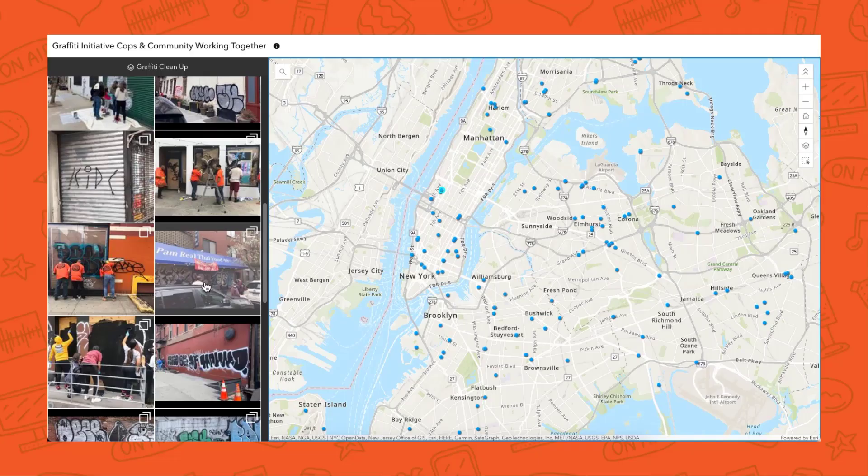Another template we've seen getting used a lot is Attachment Viewer. It's a template you'd use to basically display attachments that have been collected on a feature layer — using Field Maps, Survey123, or Quick Capture. People are in the field collecting data that has attachments. We see this used for disaster response, people going out and surveying what's happened, then using Attachment Viewer to review it back in the office, or as a presentation resource showing a gallery of attachments alongside a map.